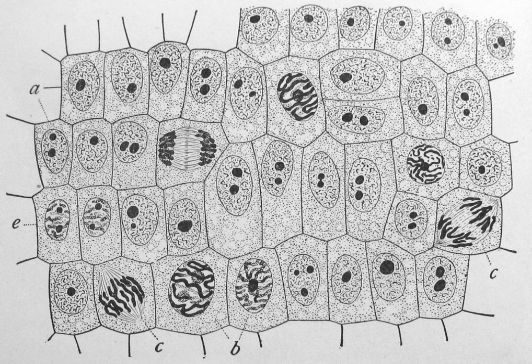A gelatinous capsule is present in some bacteria outside the cell membrane and cell wall. The capsule may be polysaccharide as in pneumococci and meningococci, polypeptide as in Bacillus anthracis, or hyaluronic acid as in streptococci. Capsules are not marked by normal staining protocols and can be detected by India ink or methyl blue, which allows for higher contrast between the cells for observation.